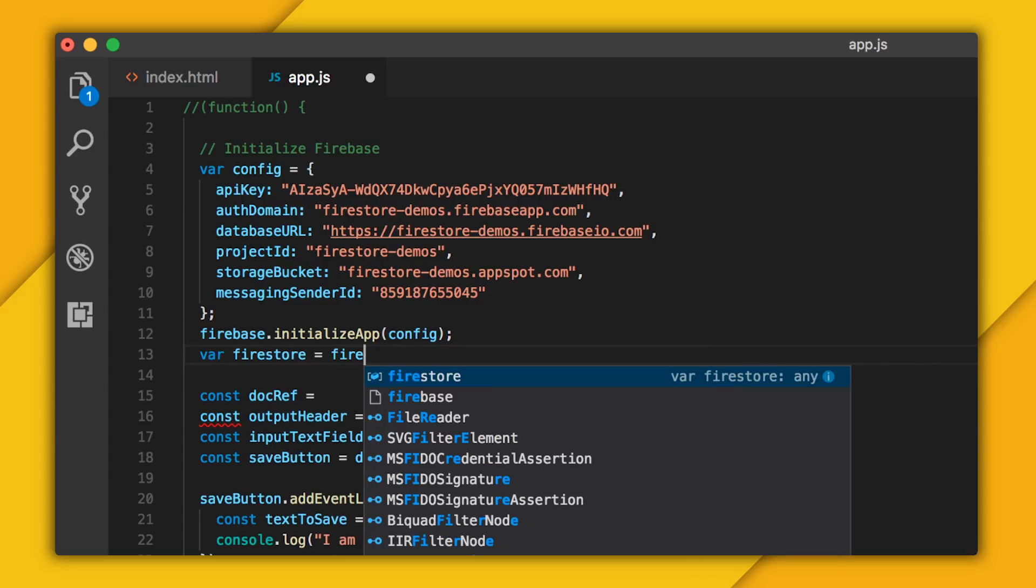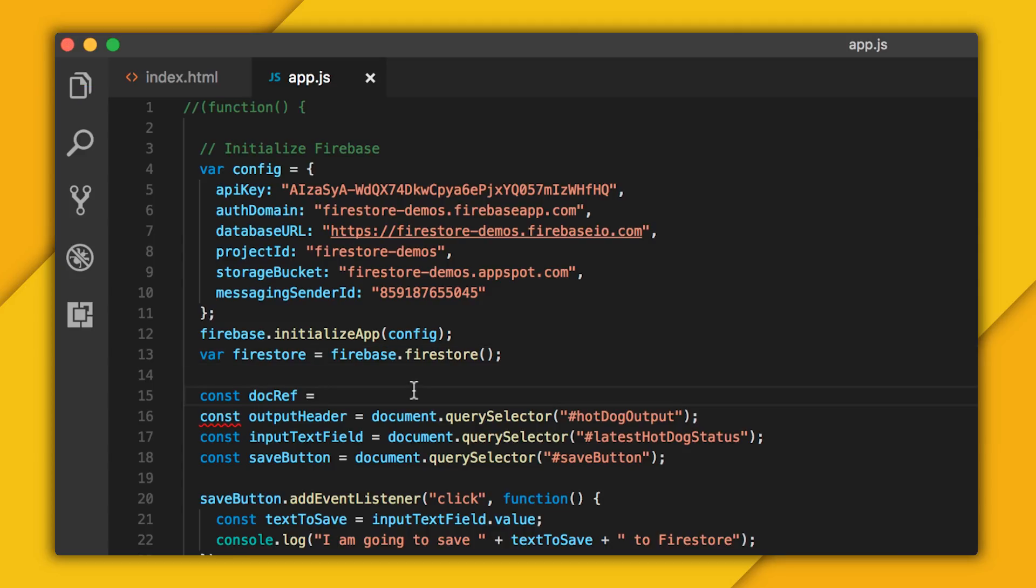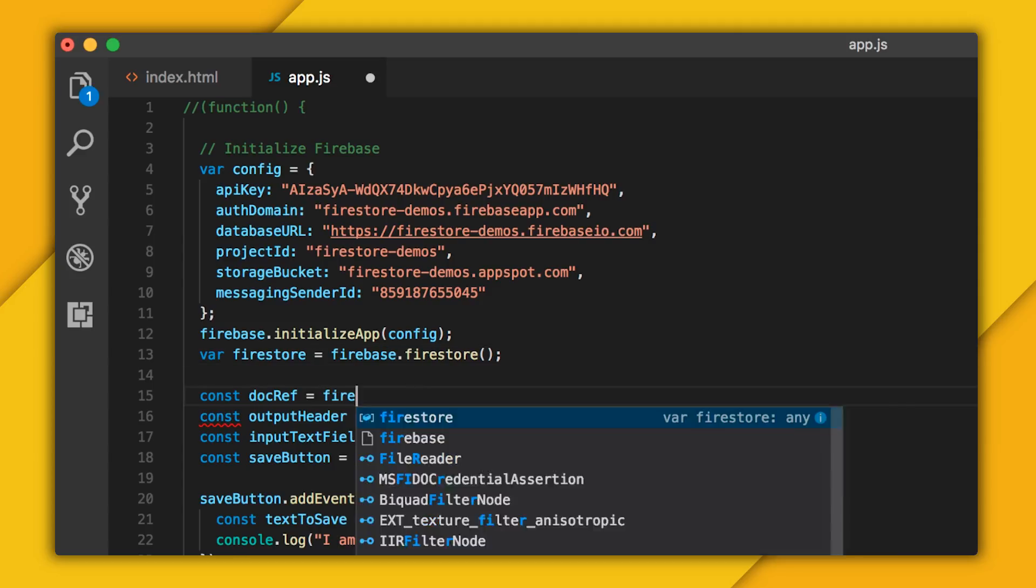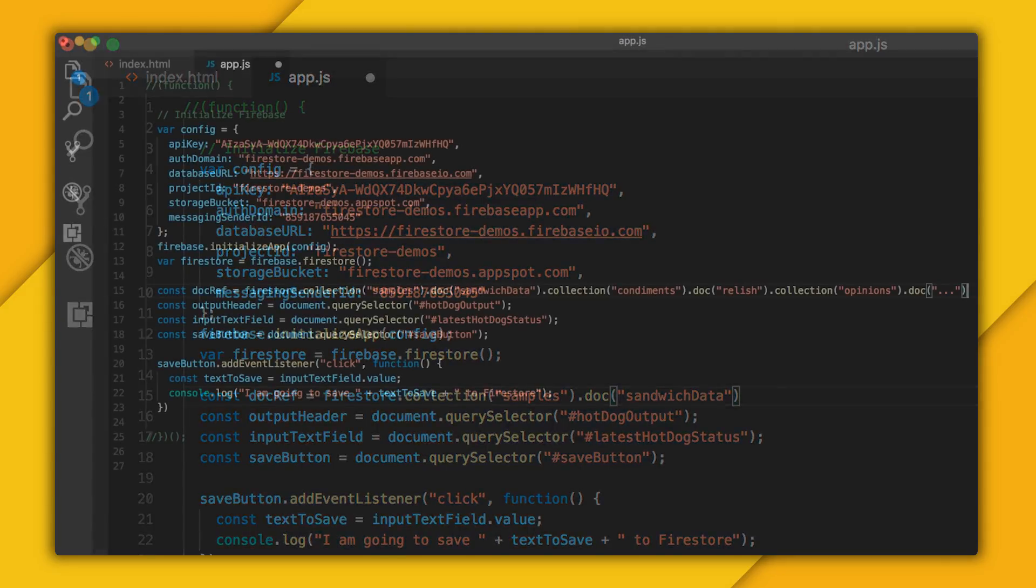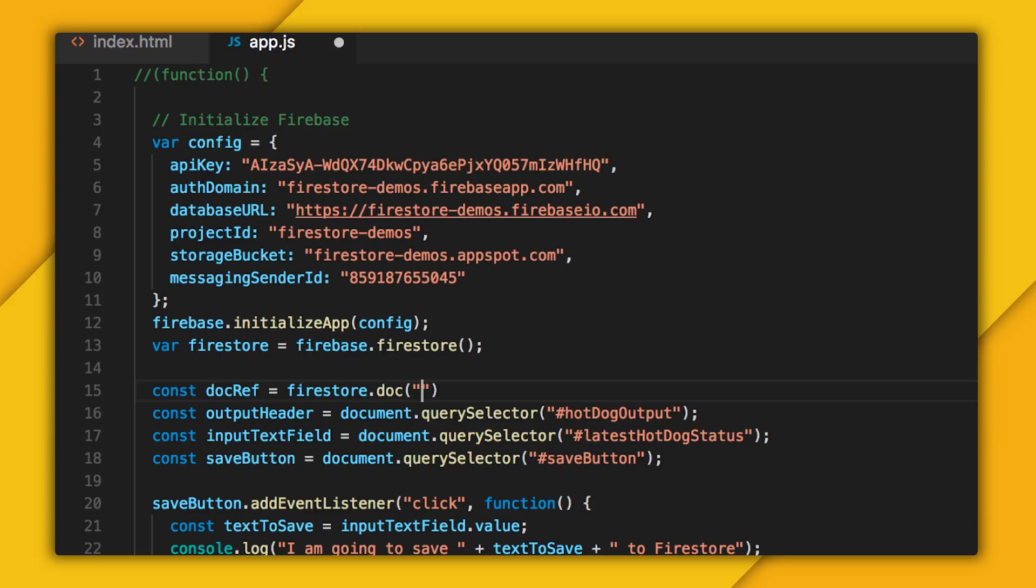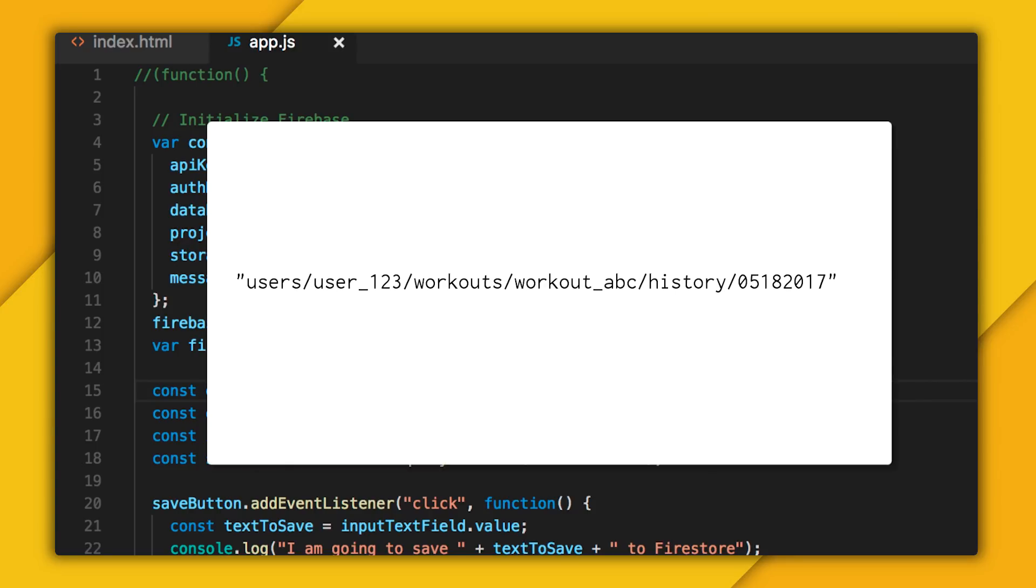Actually, first let me just grab a reference to Firestore. And now there are a few ways of setting my document reference. I could call firestore.collection samples.doc sandwich data. Now I kind of like doing this because it serves as a nice reminder that you're always going to be alternating between collections and documents. But it does start to look a little silly when you get several layers deep. So an alternative that I sometimes like is calling firestore.doc and then entering the full path directly here. In our case, the path would be samples slash sandwich data. Just remember that in your path, you're always going to be alternating between collections, documents, collections, documents, and so on.